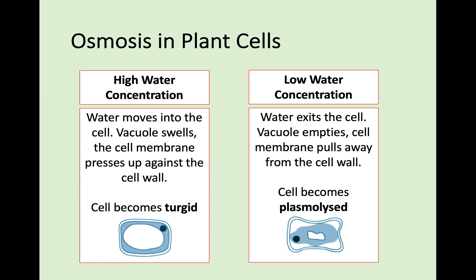For plant cells — as you'll see in the potato osmosis experiment — if you place a plant cell into a high water concentration, water moves in through osmosis just as before, but because the plant cell has a cell wall it doesn't burst. It swells massively, the vacuole swells, the cell membrane presses against the cell wall, and the cell becomes what we call turgid — do not say swollen, say turgid. In a low water concentration, water exits the cell through osmosis, the vacuole empties, the cell membrane pulls away, and the cell becomes what we call plasmolysed. Turgid and plasmolysed are two really important terms to remember.